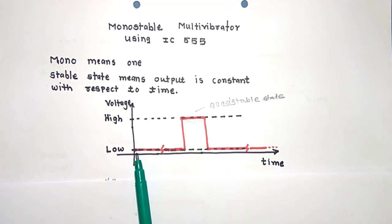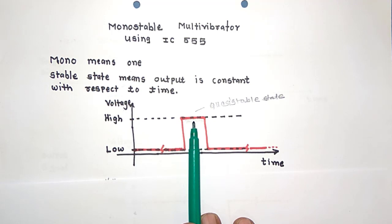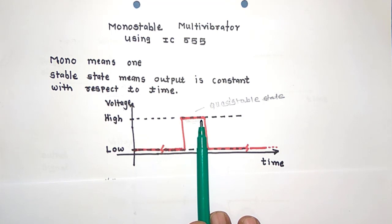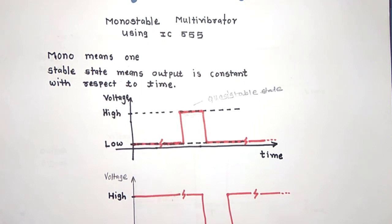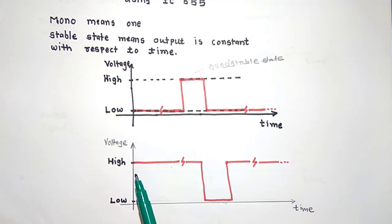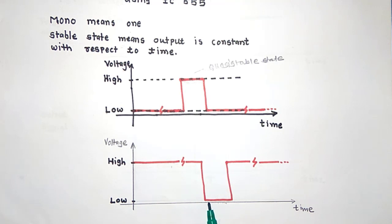The low voltage state is the stable state and the high voltage state is the quasi-stable state. In this monostable multivibrator, low state is stable and high state is quasi-stable. In other types of monostable multivibrators, different situations may exist — the high state may be the stable state and the low voltage may be the quasi-stable state.